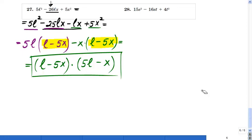Hi, Nevada Virtual Academy, Mr. N. Let's try factorization here, problem number 28. 15s squared minus 16st plus 4t squared.